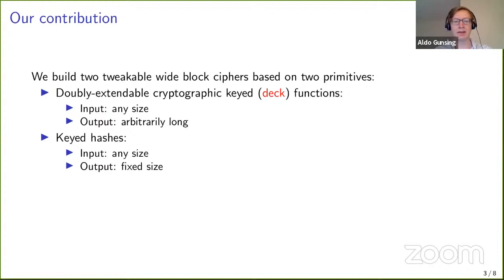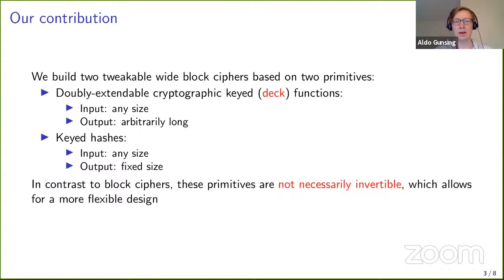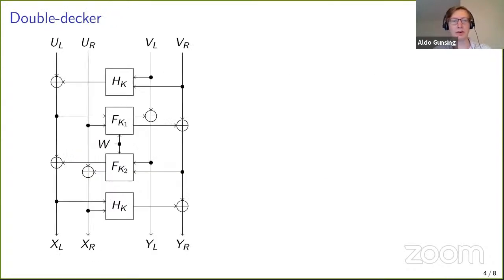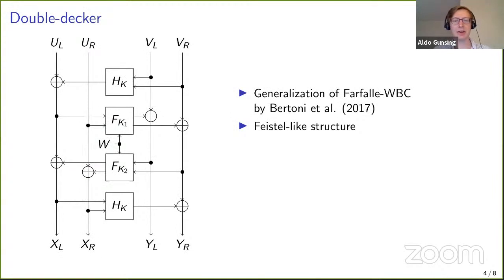Keyed hashes are the second kind of primitive; they are very similar but only output a fixed size of output. In contrast to block ciphers, these primitives are not necessarily invertible, which allows for more flexible and efficient design. The first construction is the double-decker, a generalization of the Farfalle wide-block cipher by Bertoni and others. If you merge the left two lanes and the right two lanes together, it's actually just a four-round Feistel network.